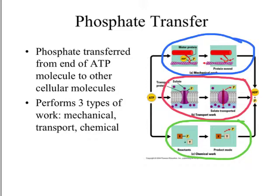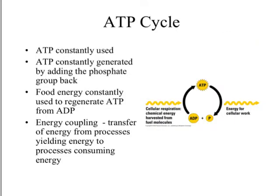ATP can be used for mechanical work, transport work, or chemical work. As mentioned in the random facts, 10 million ATP molecules are used every second in one muscle cell, so ATP is constantly being used. Luckily, the ATP molecule is recyclable — it can be regenerated by adding a phosphate group back to the ADP, giving us an ATP cycle so our bodies don't have to deal with wasted, spent energy molecules.